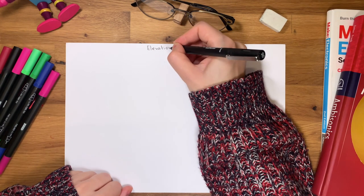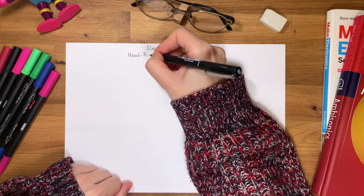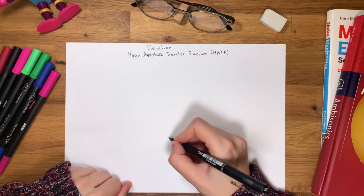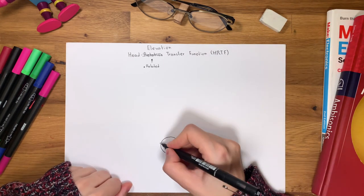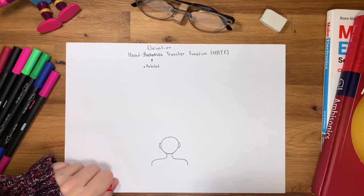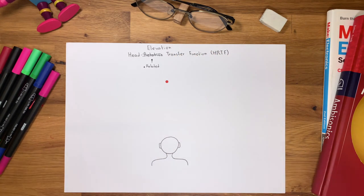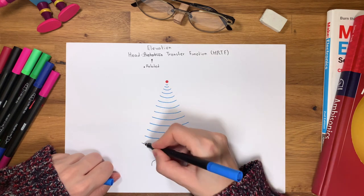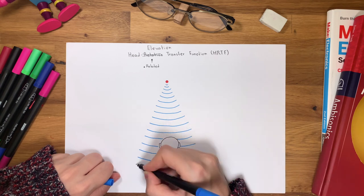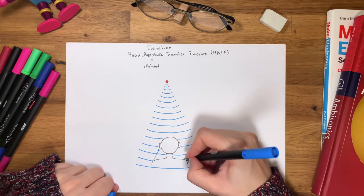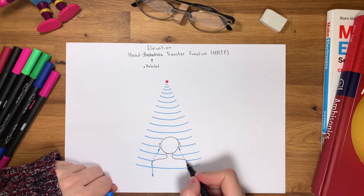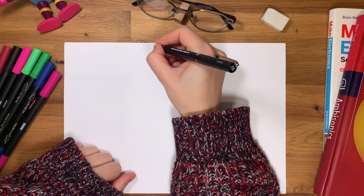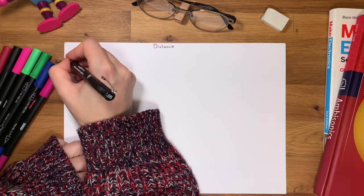ITD and ILD do not specify the elevation of sound. The ability to localize a sound in a vertical plane is based on the head-related transfer function (HRTF). The head and ears diffract and reflect sound in a unique way on its path to the eardrums. The HRTF is a digital model of that physical filtering process. HRTFs are unique to every individual, as they depend on physical anatomy — torso, head, and outer ear shape.